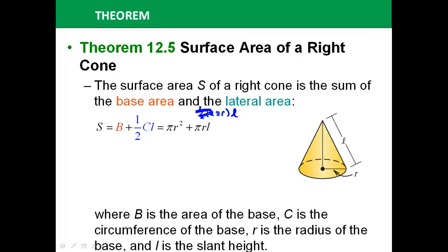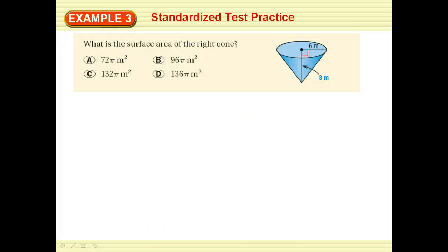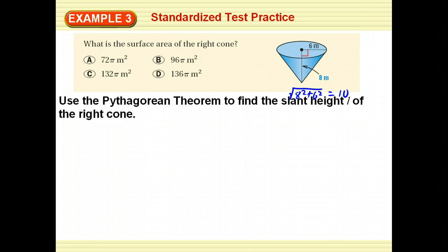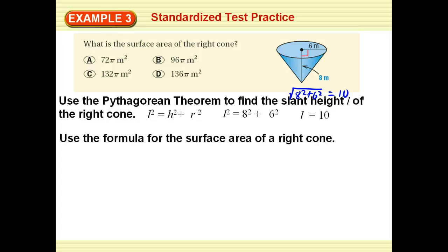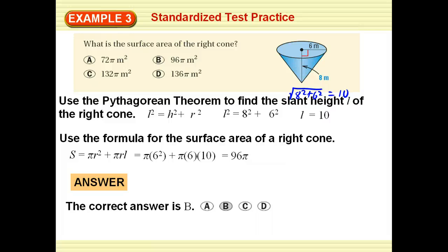B is the base area, C is the circumference, r is the radius, and L is the slant height. To find the slant height, I know the radius and the height — they form a right triangle with the slant height as the hypotenuse. So L equals the square root of 8 squared plus 6 squared, which is 10. Using the surface area formula: pi times 6 squared plus pi times 6 times 10 gives 96π — so that is the answer.